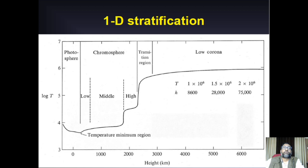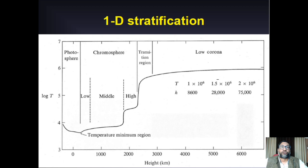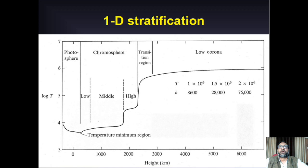Because of thermonuclear reactions in the interior, the temperature is very high — of the order of 10 to the power 7 Kelvin. But the temperature drops as we come to the surface, to about 6,000 Kelvin. As you go into the atmosphere, the temperature slowly drops for about 500 kilometers — as you would expect in Earth or other planets. I'm sitting in Nainital where we have a much more pleasant temperature than in the plains.